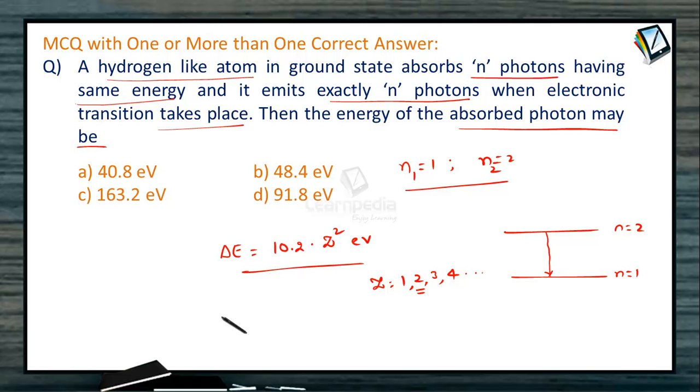For Z=2, ΔE becomes 10.2 × 2² = 10.2 × 4 = 40.8 eV. Thus, if it is hydrogen-like species, taking example of helium ion, the energy of photon corresponds to 40.8 eV. Therefore, option A is correct.